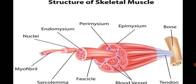Skeletal muscles are multinucleated and made up of elongated cells — their cells have more than two nuclei. They show striations, meaning they are striped in appearance. Today we will discuss the structural detail of skeletal muscles.